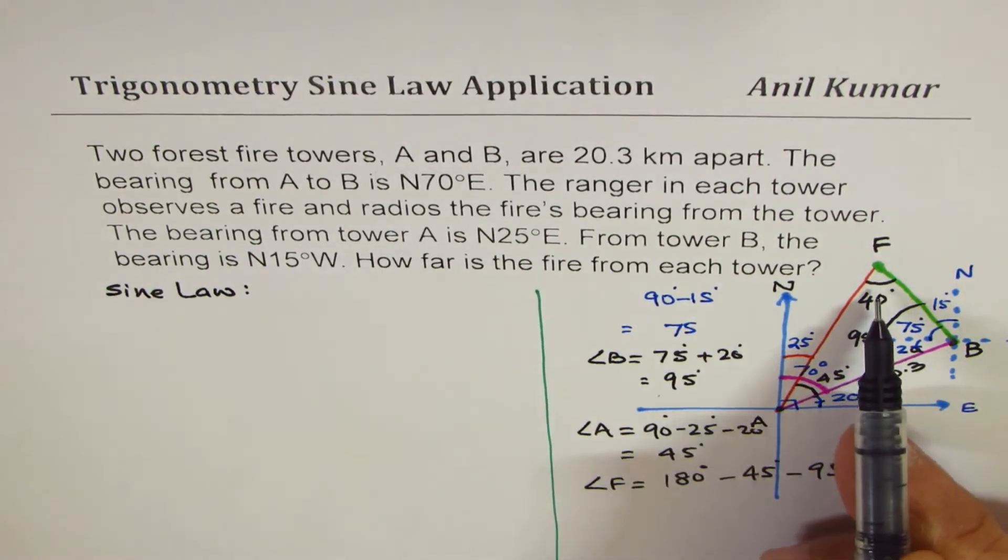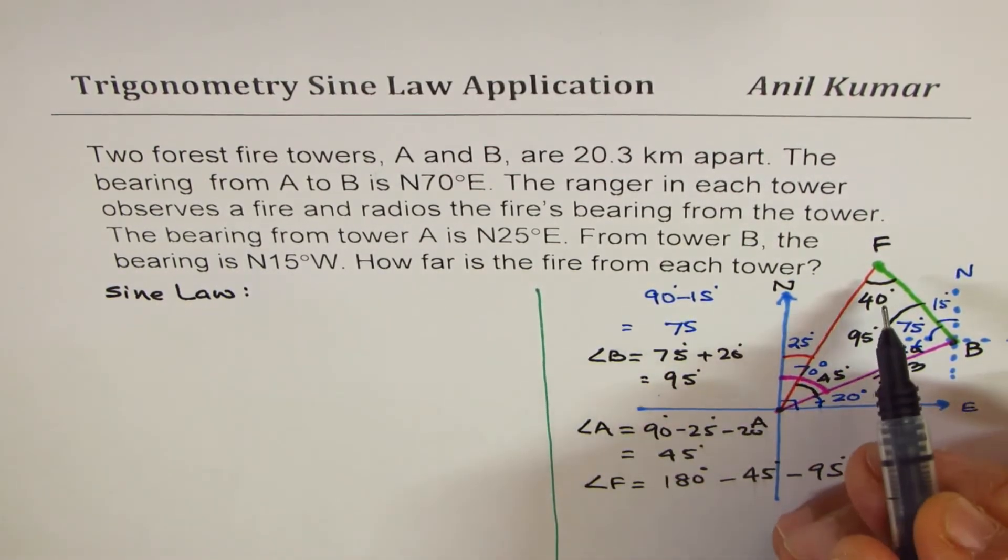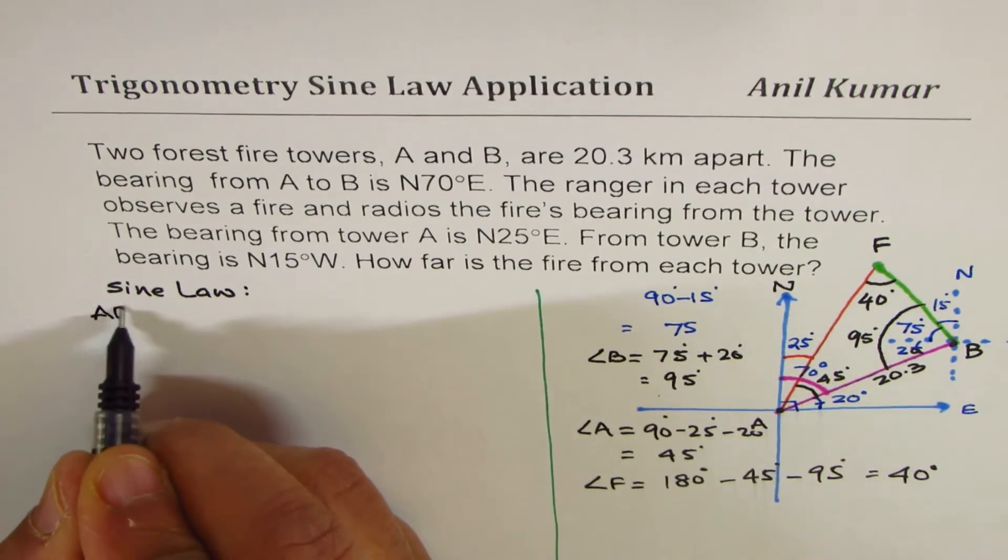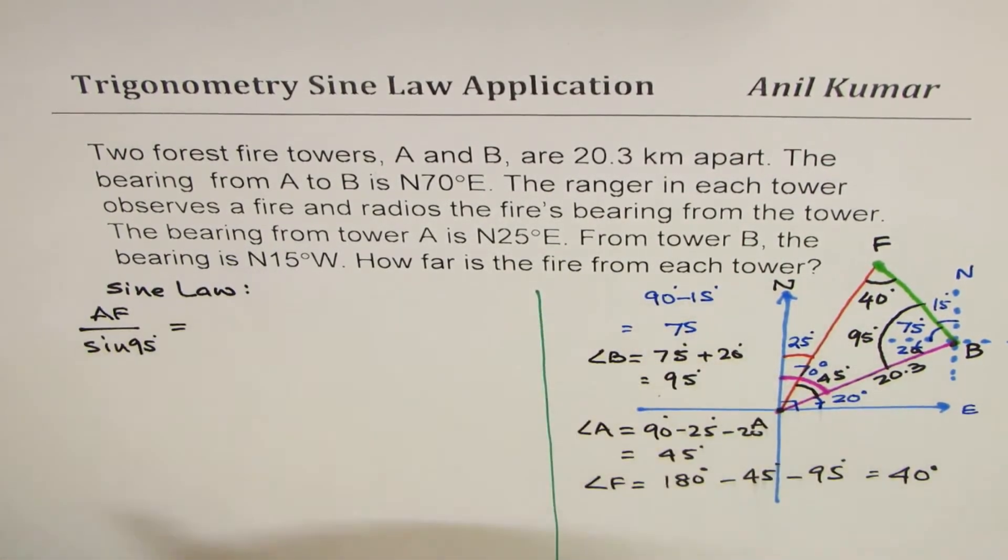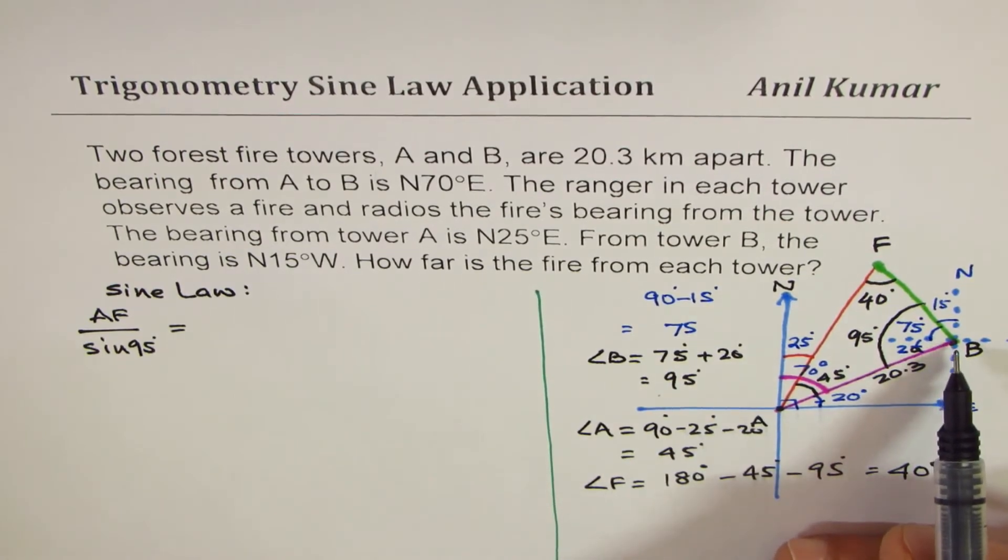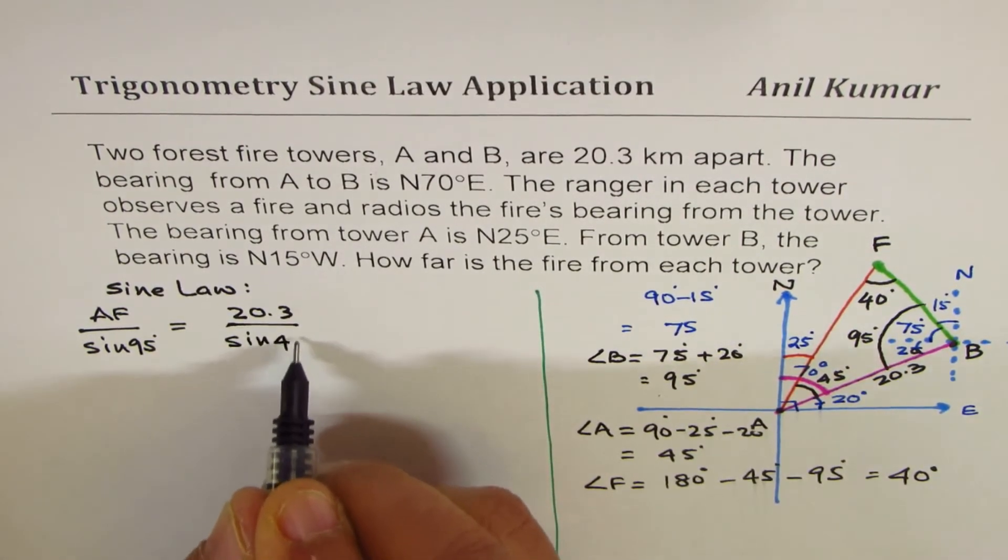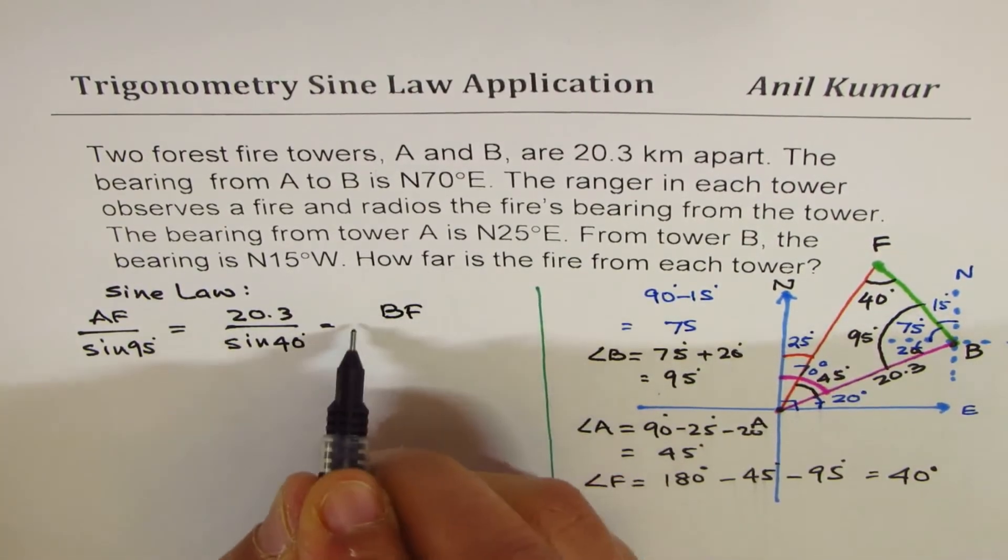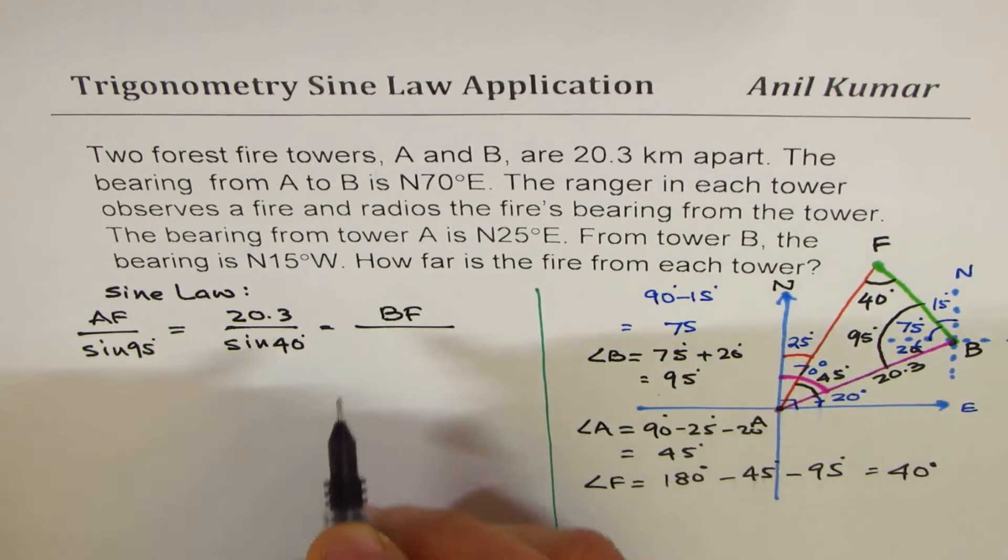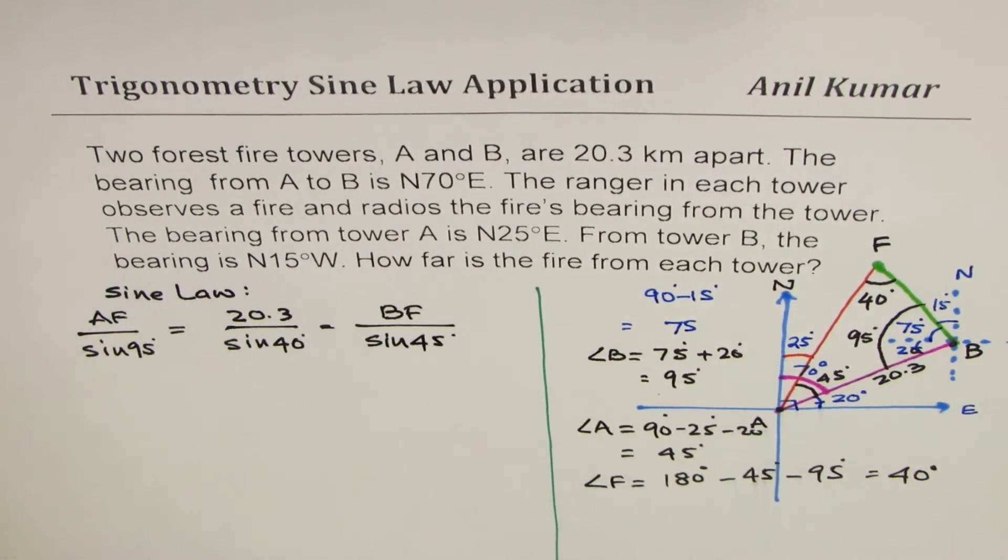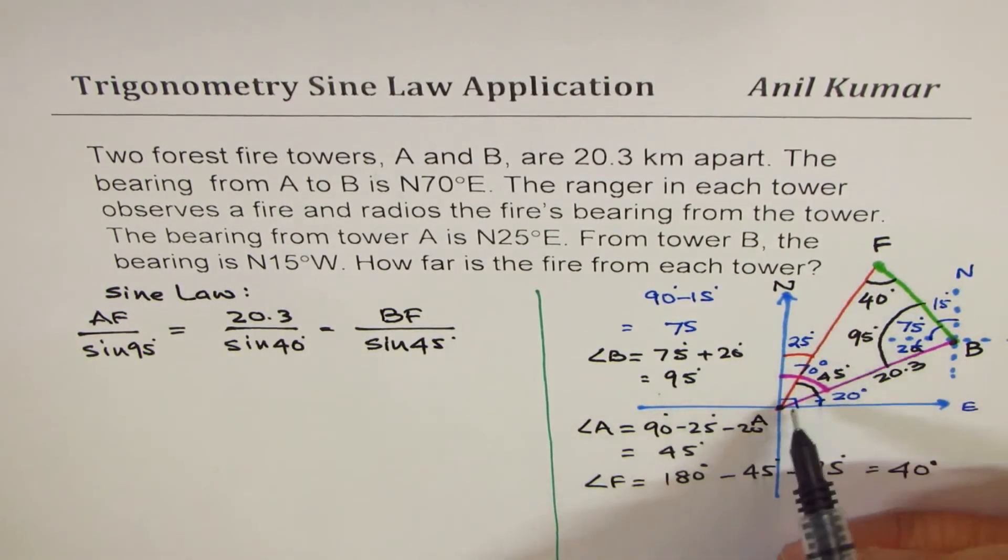Known side and angle. So this ratio is, we need to find the side. So I prefer to keep the side on the top. So let us say that AF over opposite angle 95, sine of 95 is equal to 20.3 over the angle 40, sine of 40 is equal to BF. Distance of fire from tower B over the angle opposite to B is 45 degrees, sine of 45 degrees.